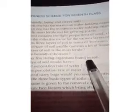Question 25. Name any five living organisms found in soil. Ants, beetles, earthworms, bacteria, fungi.